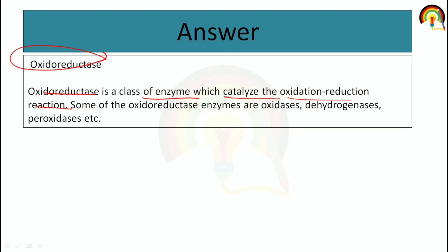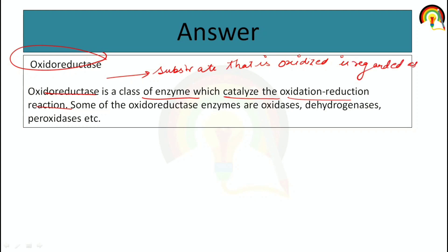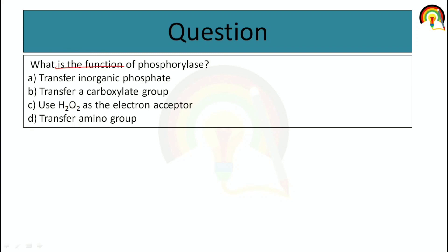Oxidoreductase is a class of enzyme which catalyzes the oxidation-reduction reaction. It is part of all enzymes catalyzing oxidoreduction. The substrate that is oxidized is regarded as a hydrogen donor. Some of the oxidoreductase enzymes include oxidases, dehydrogenases, peroxidases, etc.